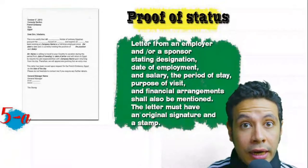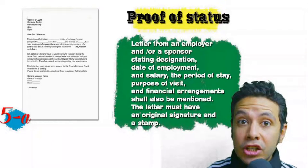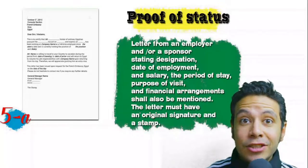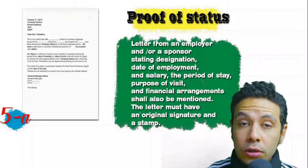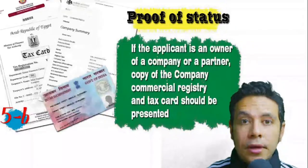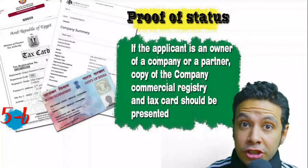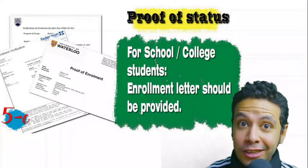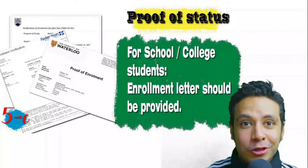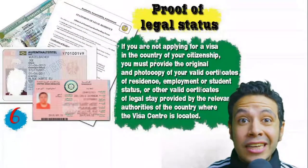In most visa application processes you will be required to provide proof of status. If you are an employee, you will have to provide a letter from your employer or HR department mentioning your name, work details, and salary, with address and contact numbers. All letters must have an original signature and a stamp. If you are the owner of a company or run your own business, your commercial registry and tax card must be presented. If you are a student, an enrollment letter should be provided from your university or school.